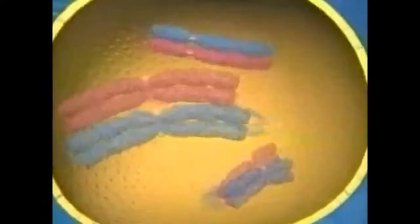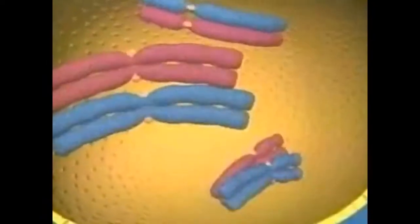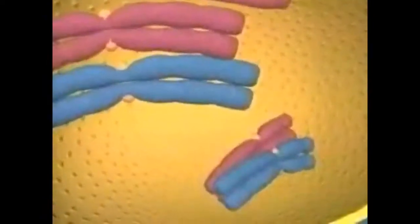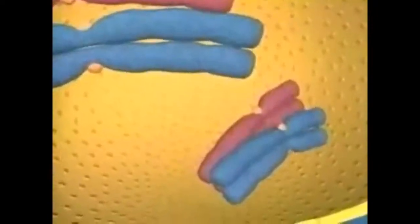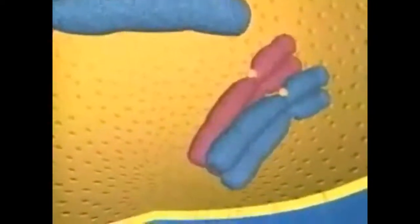The cell prepares for meiosis just as it does for mitosis. But as the DNA condenses, each chromosome finds its homologous counterpart. These matching pairs of chromosomes hold equivalent genetic information, one set from mother and one from father.